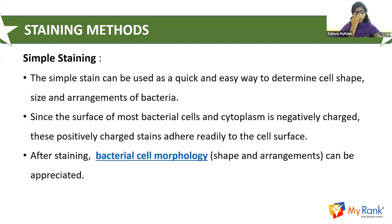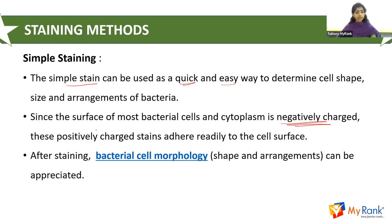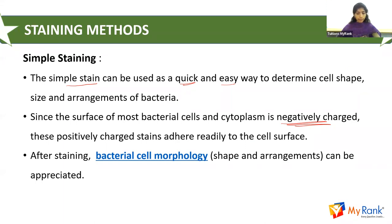Simple staining can be used as a good and easy way to determine cell shape, size, and arrangement of bacteria. Since the surface of most bacterial cells and cytoplasm are negatively charged, positively charged stains are readily used on the cell surface — the positive and negative charges attract, and the dye adheres to the cell surface. After staining, the bacterial morphology — shape, size, and arrangement — can all be observed.